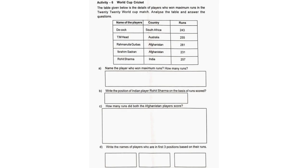Players and runs: Kock, South Africa — 243; Travis Head, Australia — 255; Rahmanullah Gurbaz, Afghanistan — 281; Ibrahim Zadran, Afghanistan — 231; Rohit Sharma, India — 257.